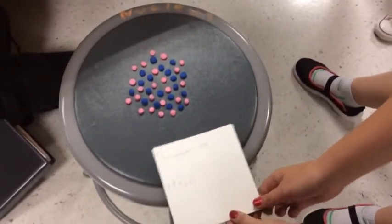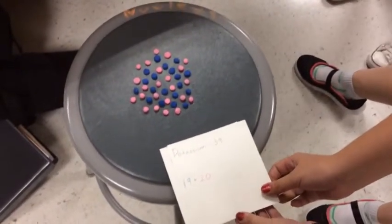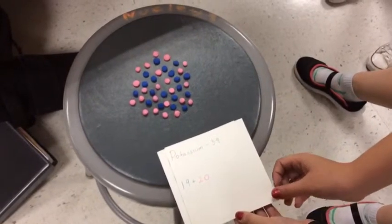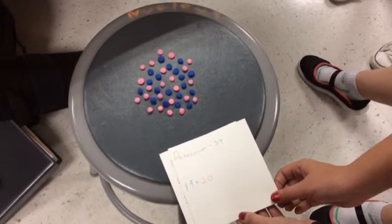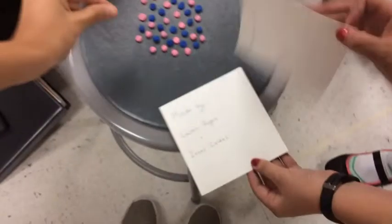We'll use three different isotopes of potassium as examples. This is the nucleus of potassium-39, and it is 39 because of its 19 protons and 20 neutrons.